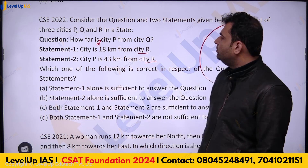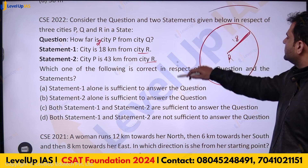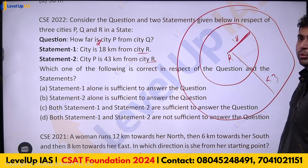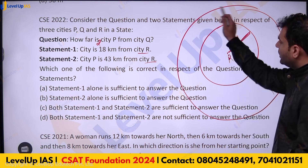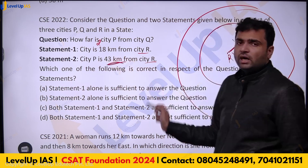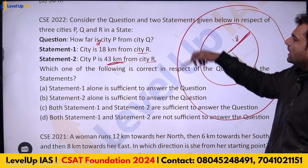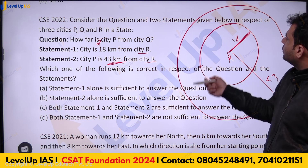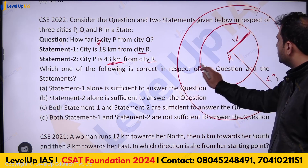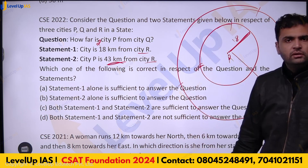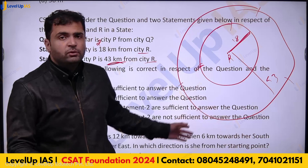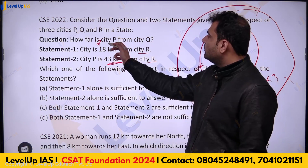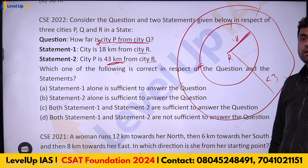Statement two: P is 43 kilometers from city R. So city P could be anywhere on a circle of radius 43 centered at R. With both statements, P and Q can each be anywhere on their respective circles, giving infinitely many possible distances between P and Q. Even combining both statements, we cannot determine the distance.